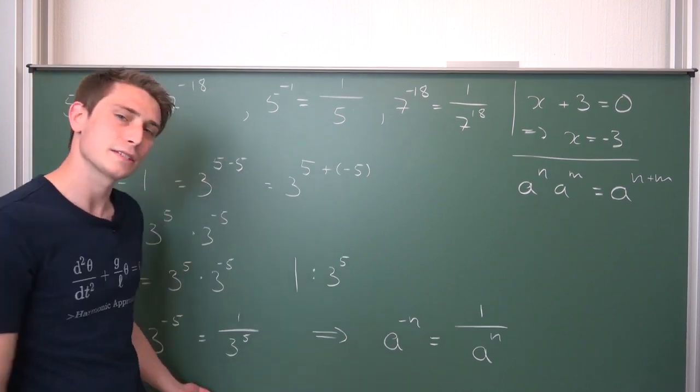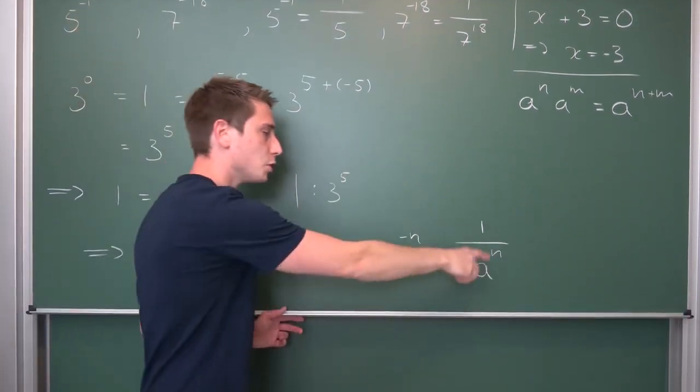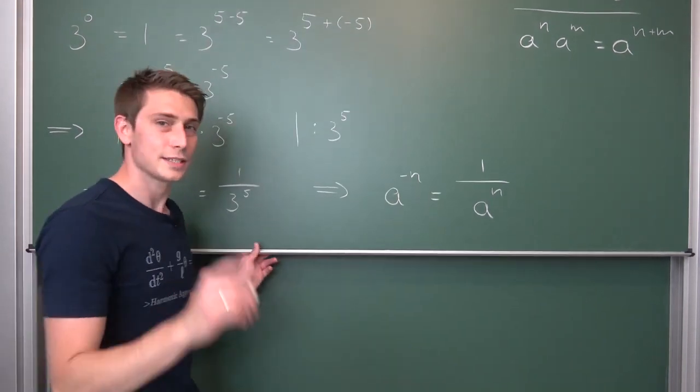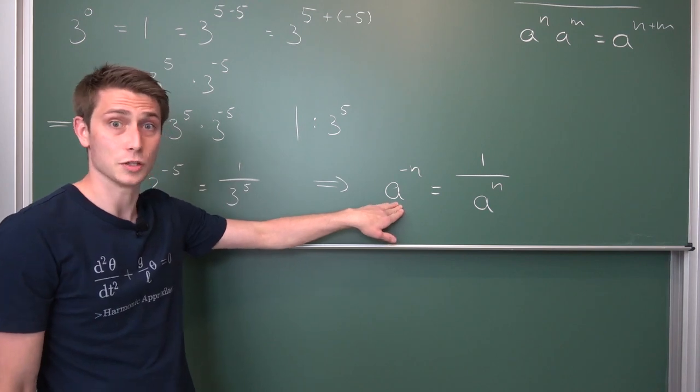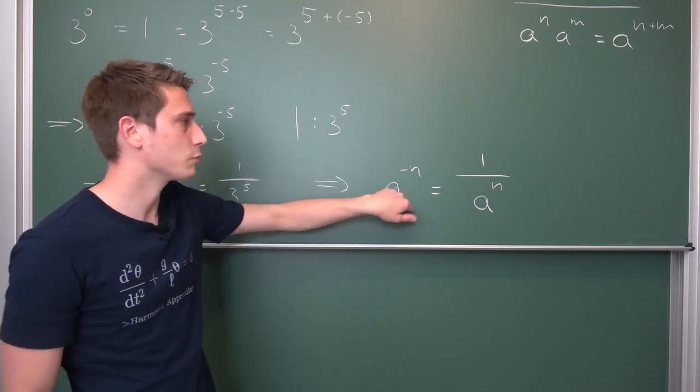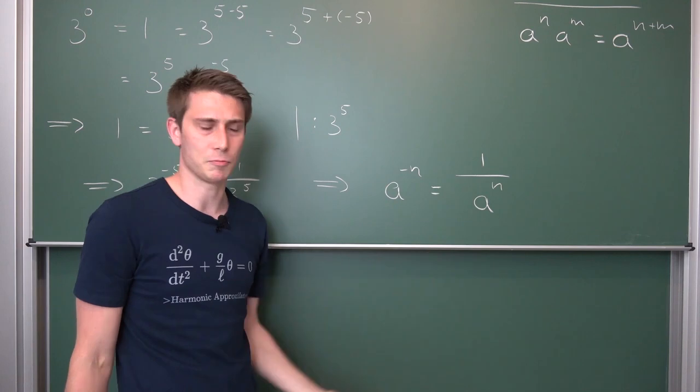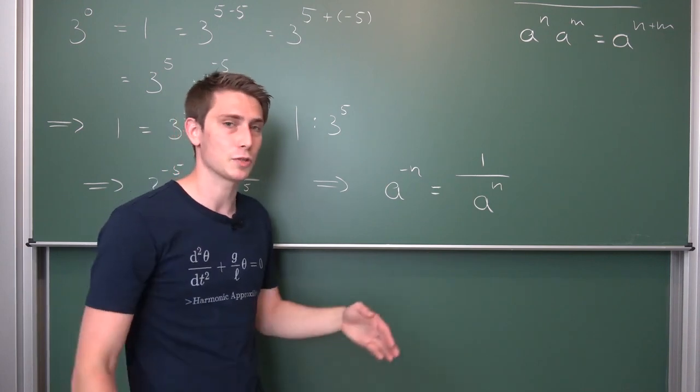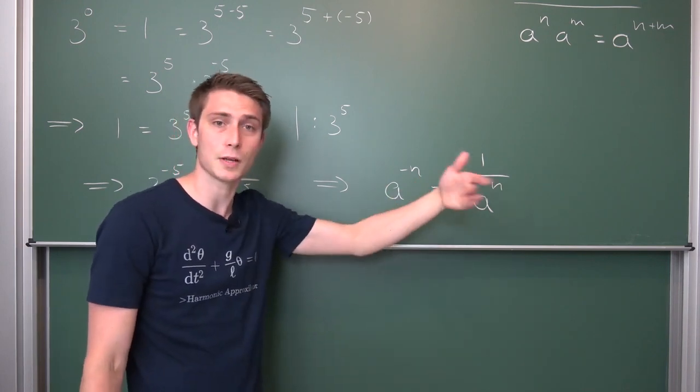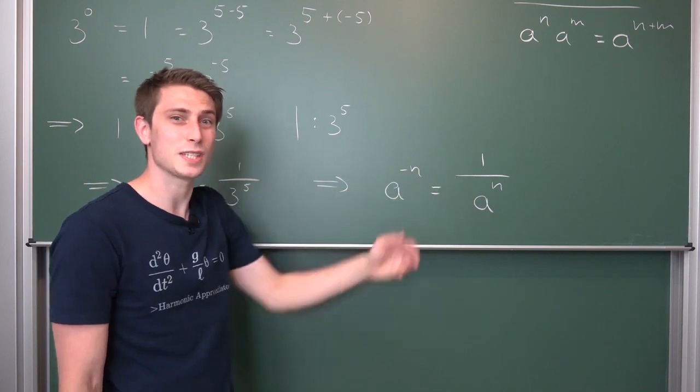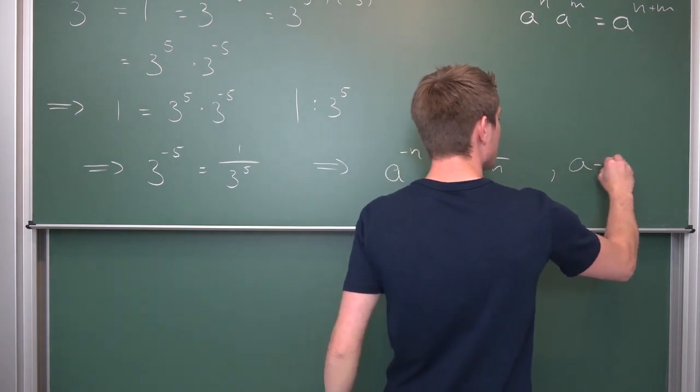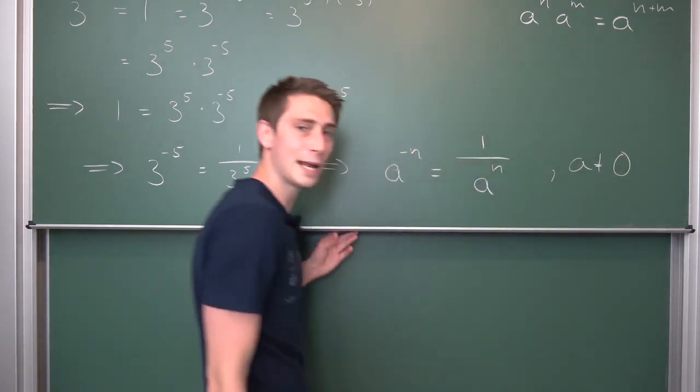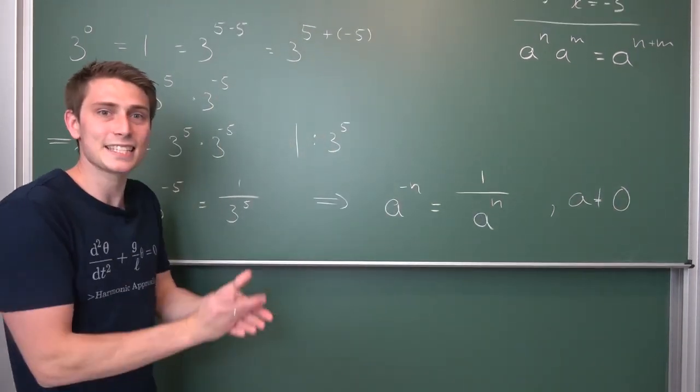But do you see one tiny little problem with what we have here? There's one problem, because what would happen if we have 0 to the negative something power? Well, then we have 1 over 0 to the something power, where 0 to the something power is just 0, times 0, times 0, blah, blah, blah, just 0. So we would have 1 over 0. Really doesn't work out. It's not really defined, meaning one little restriction that we need to put on a is that a cannot be equal to 0. And this is it.